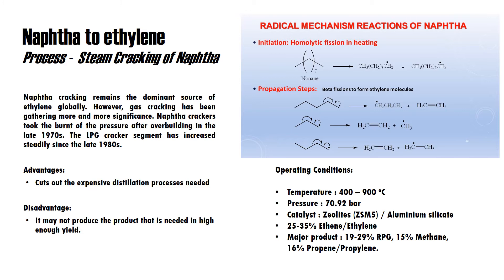The radical mechanism reaction of naphtha starts with the initiation process of homolytic fission by heating, where nonane produces two free radicals which then undergo the propagation step — beta fission — to form an ethylene molecule. The operating conditions are a temperature of 400 to 900 degrees Celsius at high temperature and 70.92 bar, using zeolite ZSM-5 or aluminosilicate as the catalyst, which produces 25 to 35% ethylene. Other major products are raw pyrolysis gas at 19 to 29%, methane at 15%, and propylene at 16%.